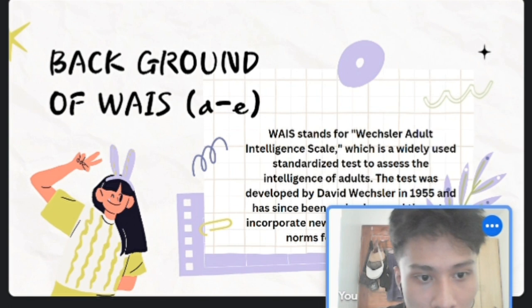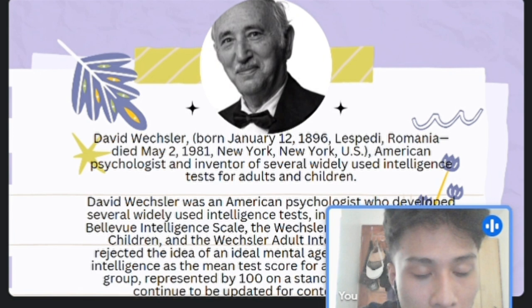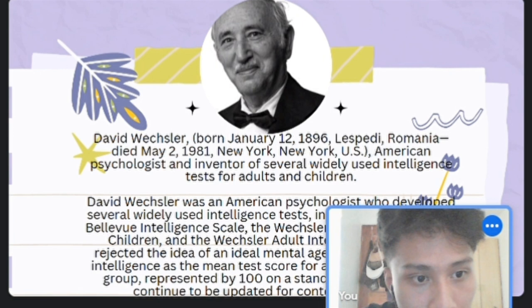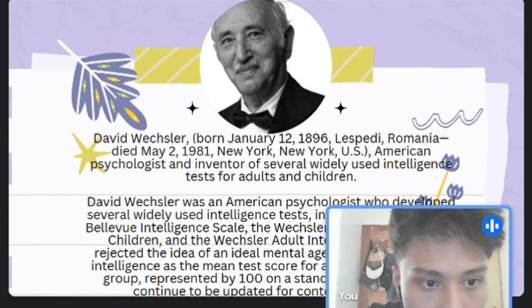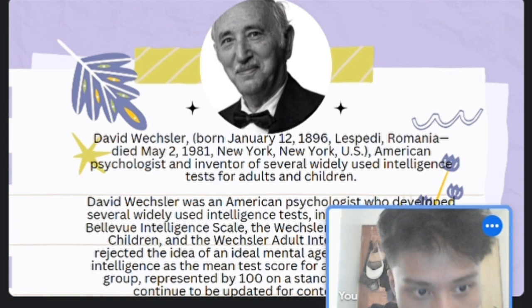The test has since been revised several times to incorporate new research and update the norms. Next, let's have a background about David Wechsler. David Wechsler was born on January 12, 1896 in Lespezi, Romania and he died on May 2, 1981 in New York. He was an American psychologist and inventor of several widely used intelligence tests for adults and children.